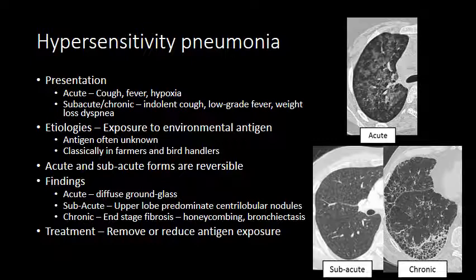In the subacute phase, patients may have an indolent cough, low-grade or intermittent fever, and weight loss. On radiographs there is a classic upper lobe predominant ground glass with centrilobular nodules scattered throughout both lungs. As hypersensitivity pneumonia goes undiagnosed it continues to progress, with increasing constitutional symptoms, and on radiographs it starts to show a fibrotic pattern with honeycombing, bronchiectasis, and eventual end-stage fibrosis.